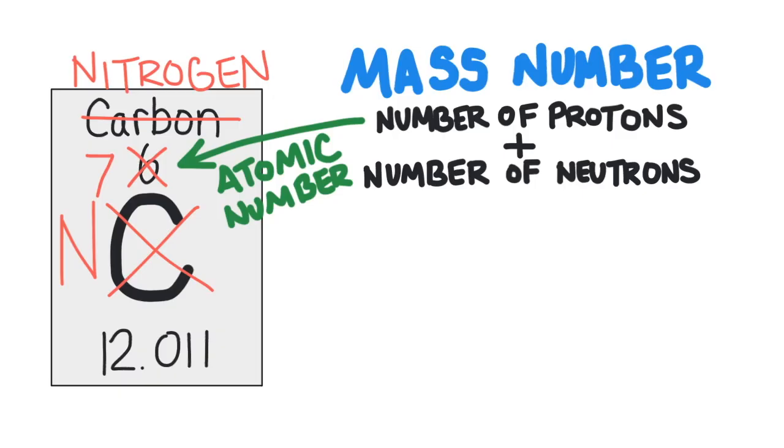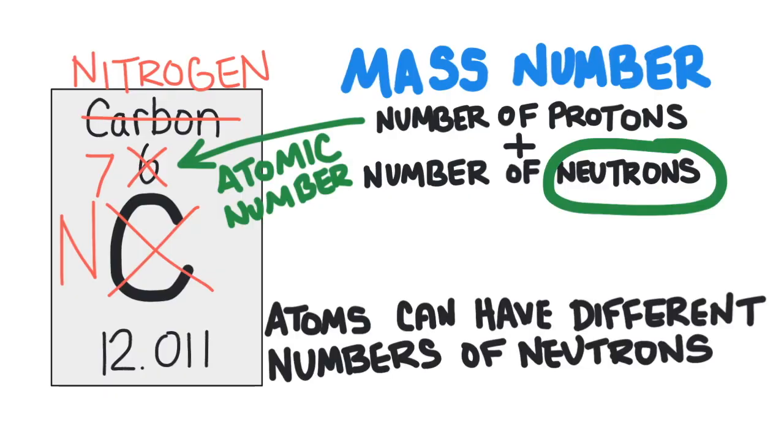The only other particle that gives mass to an atom is the neutron. The number of neutrons in an atom does not affect the identity of the element, and so a given element can have atoms with a different number of neutrons, but they'll always have the same number of protons.